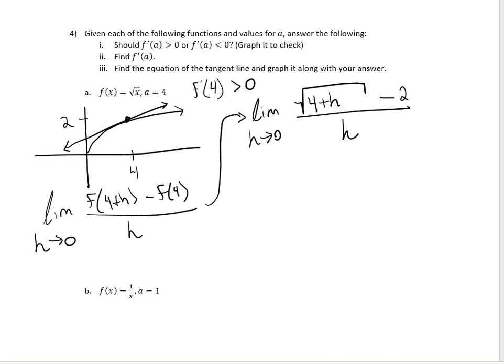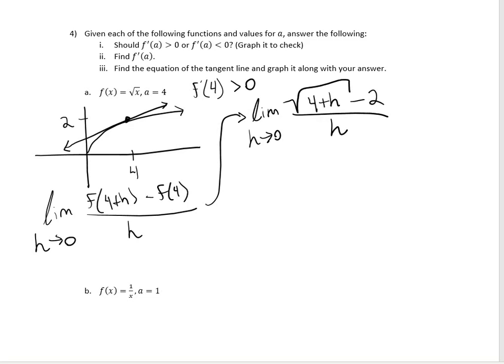Now if I just go ahead and plug in 0 for my h value, I'm going to get 0 over 0, so I need to do more work. Notice that we have a square root here. Whenever you see a square root, that should tell you that you need to multiply by the conjugate. So let's go ahead and multiply by the square root of 4 plus h plus 2, divided by the square root of 4 plus h plus 2.